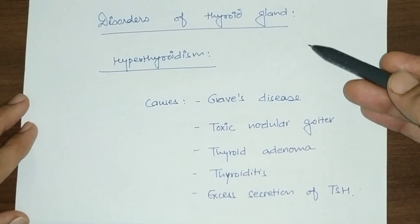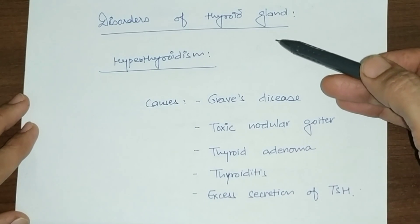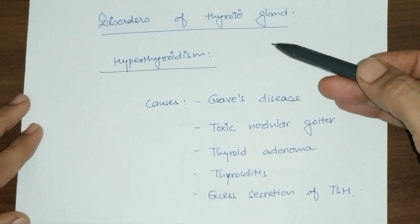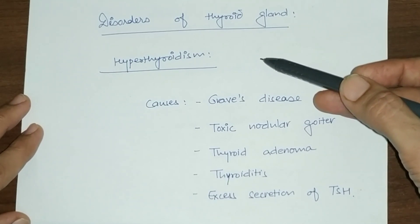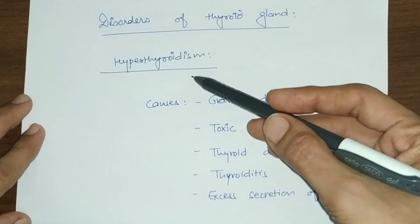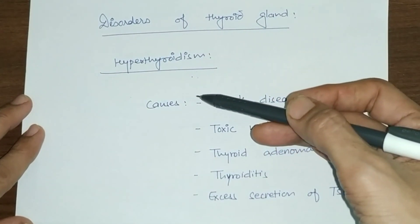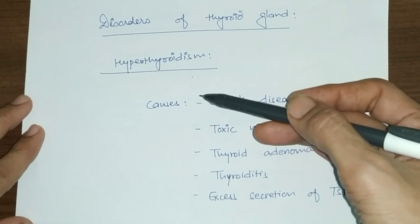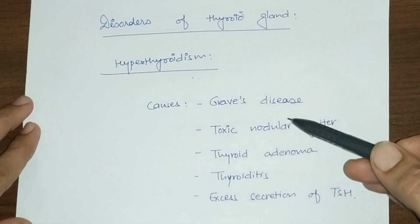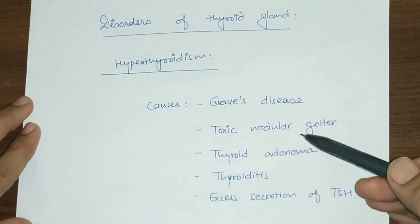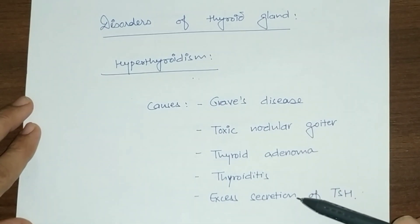Today we'll discuss disorders of the thyroid gland. Abnormalities of the thyroid gland are either hyper or hyposecretion of thyroid hormones. Starting with hyperthyroidism, which refers to increased secretion of thyroid hormones. The commonest causes are Graves disease, toxic nodular goiter, thyroid adenoma, thyroiditis, and excess secretion of TSH.